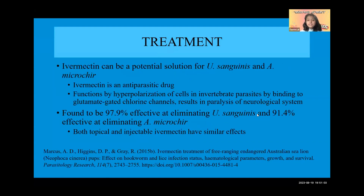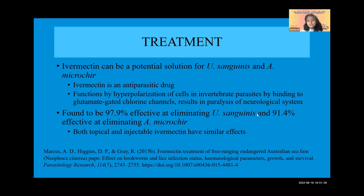Now, how do we solve this? There is a question of whether or not we should intervene at all, because the Australian sea lion is a free-ranging population — so is it ethical to get involved? However, if we are to get involved, studies have been done on ivermectin as a potential solution for U. sanguinis and A. microchir. Ivermectin is an anti-parasitic drug used frequently in dogs and cats. In this study, ivermectin was found to be 97.9% effective at eliminating U. sanguinis and similarly effective at eliminating A. microchir. Both topical and injectable ivermectin have similar effects.